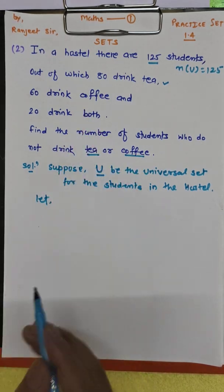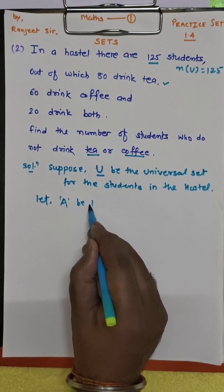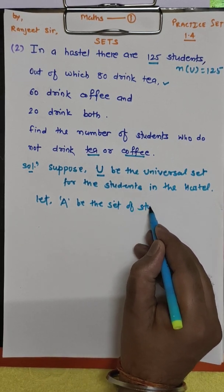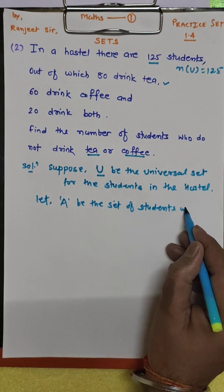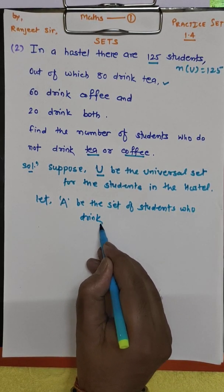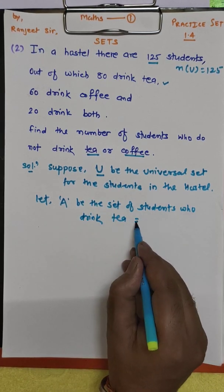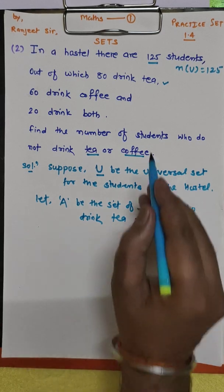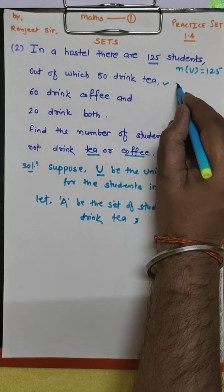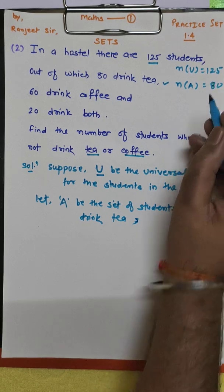Let A be the set of students who drink tea. Out of which 80 drink tea, so number of A is 80.